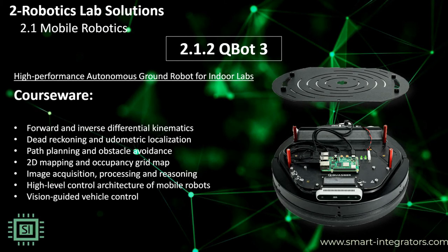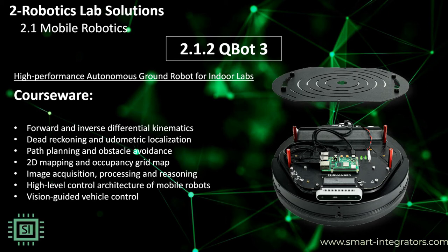The Kwancer QBot 3 is an innovative open architecture autonomous ground robot built on a two-wheel mobile platform. Equipped with built-in sensors, a vision system, and accompanied by extensive courseware, the QBot 3 is ideally suited for teaching undergraduate and advanced robotics and mechatronics courses. The open architecture control structure allows users to add off-the-shelf sensors and customize the QBot 3 for research in vehicle navigation and control, autonomous vehicles control, machine learning and computer vision, multi-agent heterogeneous and swarm robotics, and more.